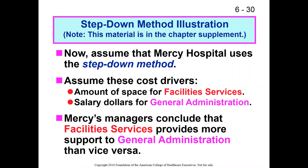We're going to assume these cost drivers. Remember, even with the step-down method, we still do the four steps of cost allocation. First, we identify our cost pools — in this example, facility services and general administration, so we'll have two cost pools. The second step is to identify the cost driver. For facilities, we'll continue to use square footage. For general administration, we're going to use salary dollars, just to look at a slightly different angle.